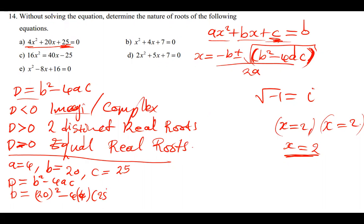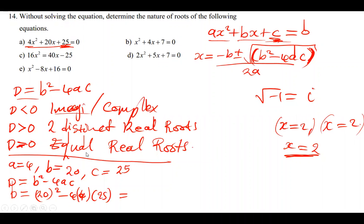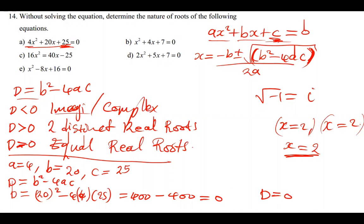Simplifying: 20² = 400, and 4 × 4 × 25 = 400. So D = 400 − 400 = 0. Since D = 0, the given quadratic equation 4x² + 20x + 25 = 0 has equal roots.